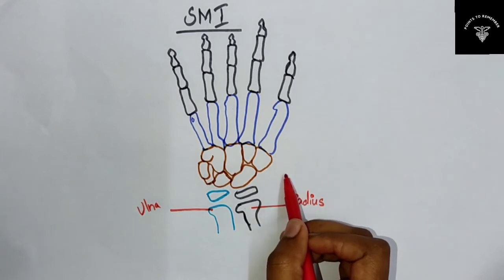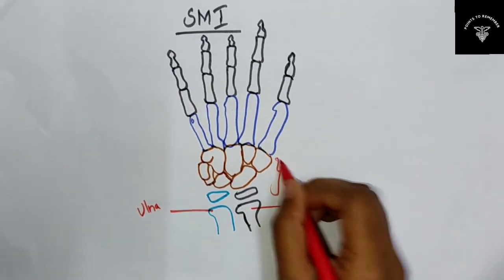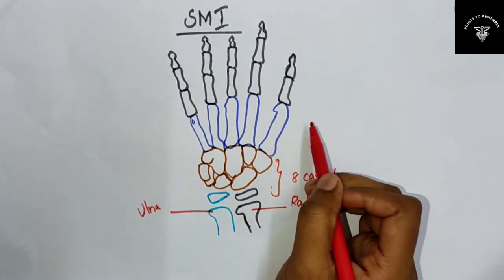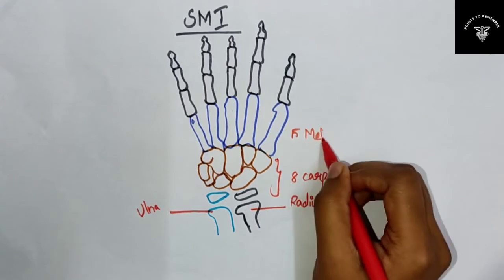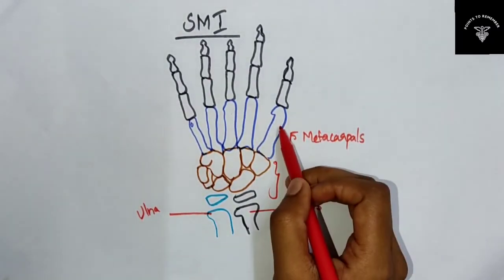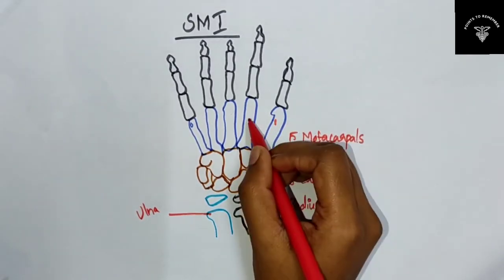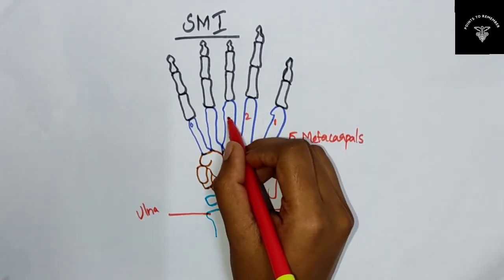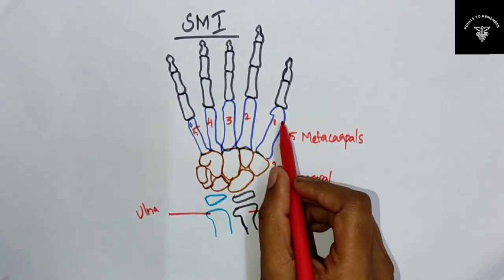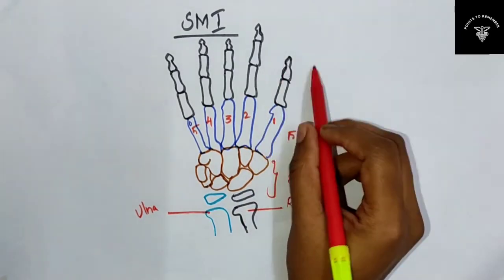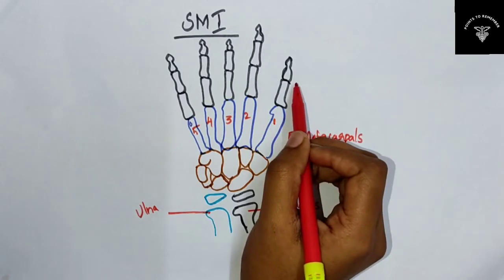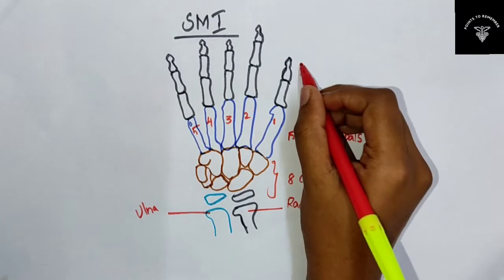These are the eight carpal bones, and these are the five metacarpal bones. The metacarpals are numbered from the thumb finger — first, second, third, fourth, and fifth metacarpal. These are your phalanges. All the fingers except your thumb have three phalanges, whereas your thumb has only two phalanges.